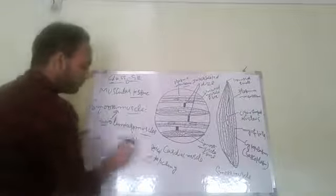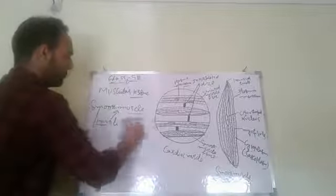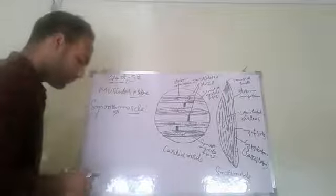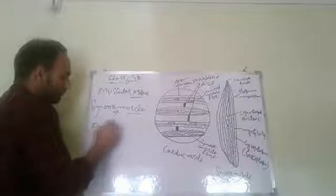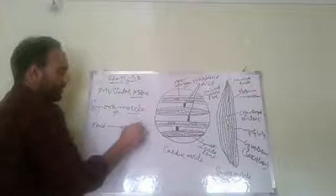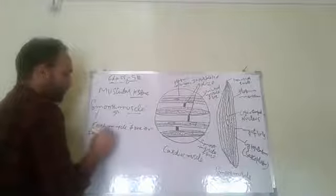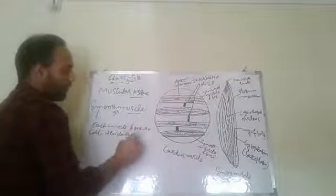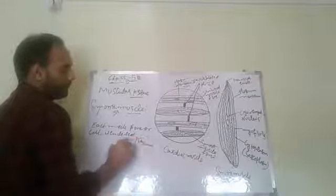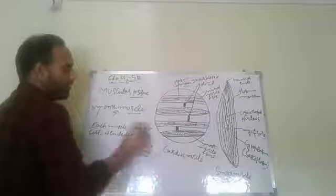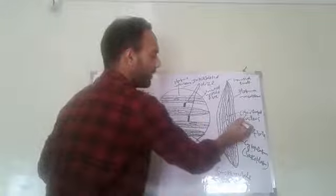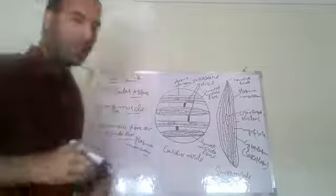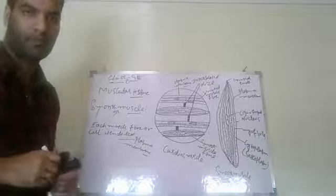Each muscle fiber or cell is enclosed in a sheath-like structure which is known as a plasma membrane. This is the plasma membrane of this smooth muscle fiber.